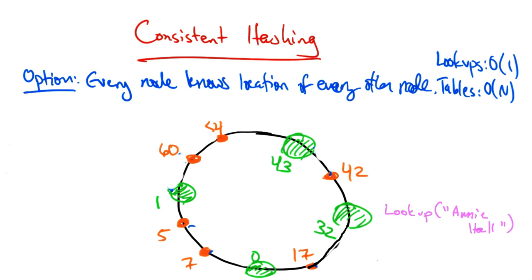So for example, if node 32 wanted to look up the location of Annie Hall, that value might hash to 60. And if every node maintained a routing table entry for every other node, 32 would know that the key corresponding to ID 60 was located at node 1. So the lookup would be order 1, but the table would be order n.